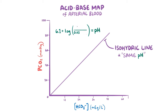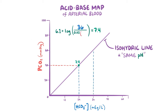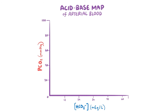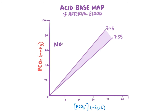For example, if the bicarbonate concentration is 24 mEq/L and the partial pressure of carbon dioxide is 40 mmHg, the Henderson-Hasselbalch equation gives us a pH of 7.4. We'd have the same pH of 7.4 with a bicarbonate of 36 mEq/L and a pCO2 of 60 mmHg, or with a bicarbonate of 12 mEq/L and a pCO2 of 20 mmHg. We can draw isohydric lines for pH 7.35 and 7.45 — a normal physiologic pH is between these values, so many combinations of bicarbonate and pCO2 fall within this normal range.